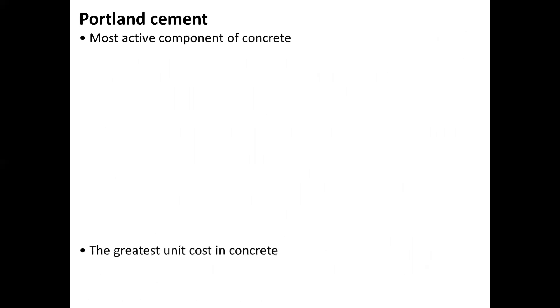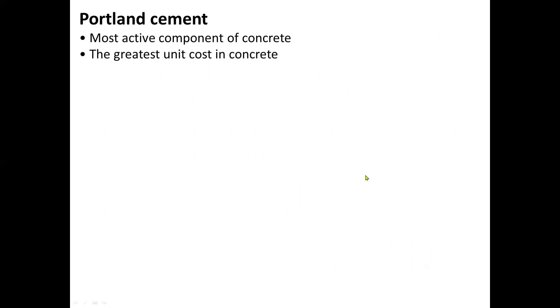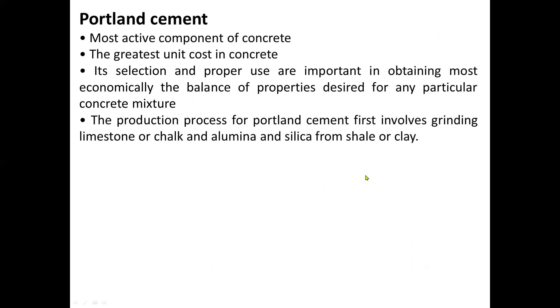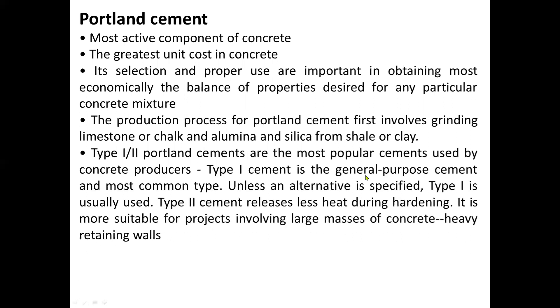Portland cement is the most active component of concrete and represents the greatest unit cost in concrete. Its selection and proper use are important in obtaining the most economical balance of properties desired for any particular concrete mixture. The production process first involves grinding limestone or chalk along with alumina and silica from shale or clay. Type 1 and Type 2 Portland cement are the most popular cements used by concrete producers. Type 1 is the general-purpose cement and the most common type — unless an alternative is specified, Type 1 is usually used. Type 2 cement releases less heat during hardening and is more suitable for projects involving large masses of concrete, such as retaining walls.